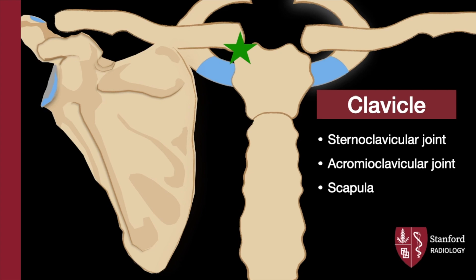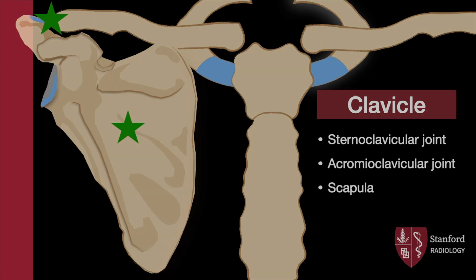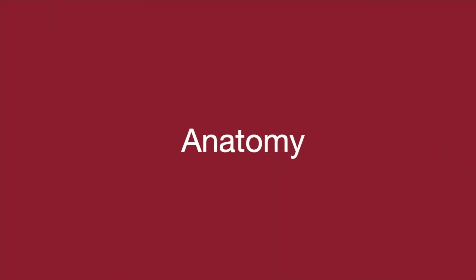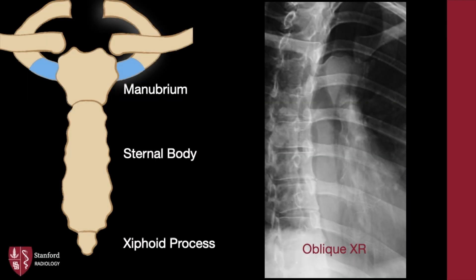The clavicle articulates at the sternoclavicular and acromial clavicular joints. The latter topic, along with the scapula, will be discussed in future videos. Let's start with anatomy. The sternum is composed of three parts: the manubrium, the sternal body, and the xiphoid process, which resembles the tip of a sword.